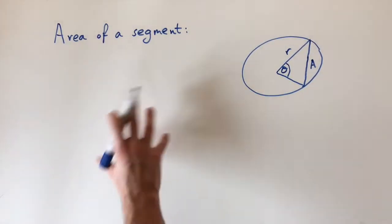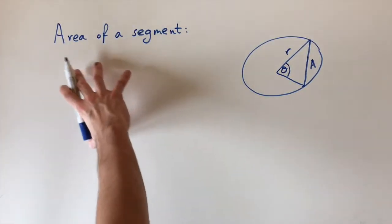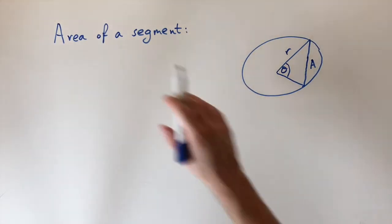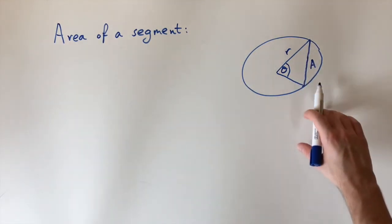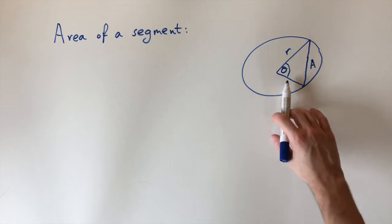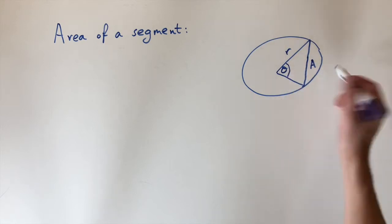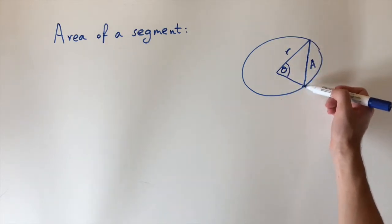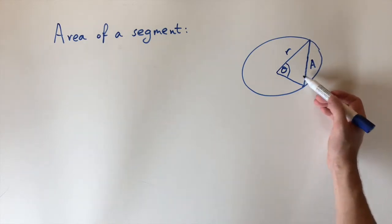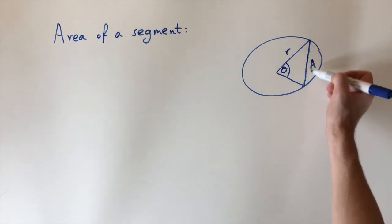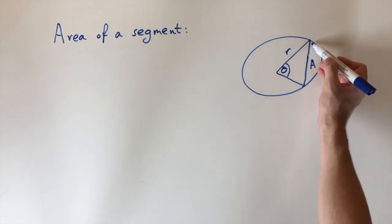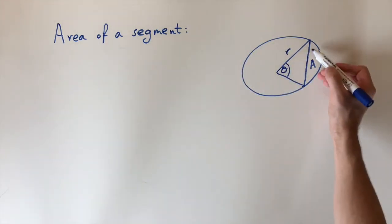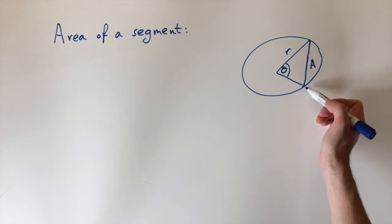In this video we're going to be talking about the area of a segment of a circle. By segment I mean this little region here — we take a sector and remove the triangle, leaving this little edge of a circle. This is sometimes called the minor segment because it's the smaller of the two. We also have this really big one, but we're usually just interested in finding the area of the minor segment.